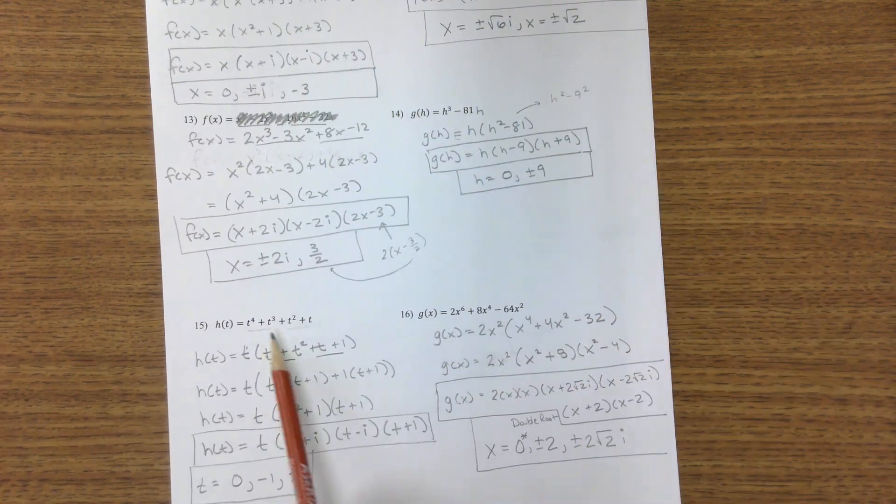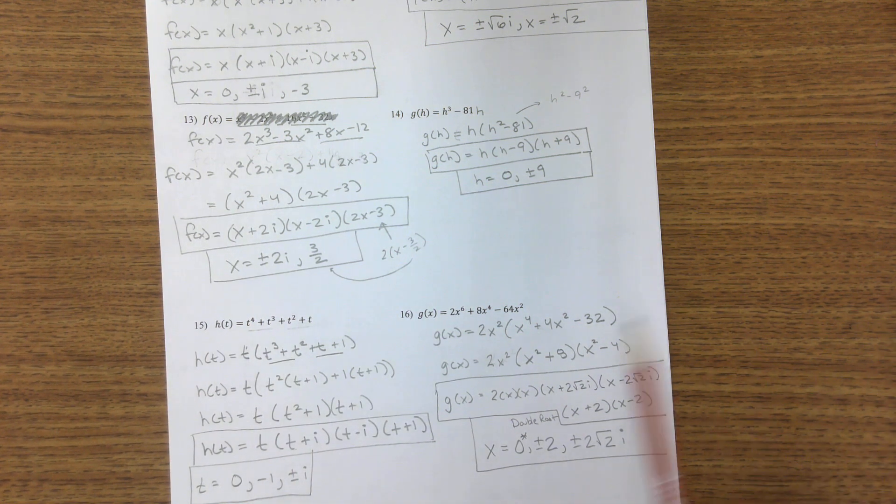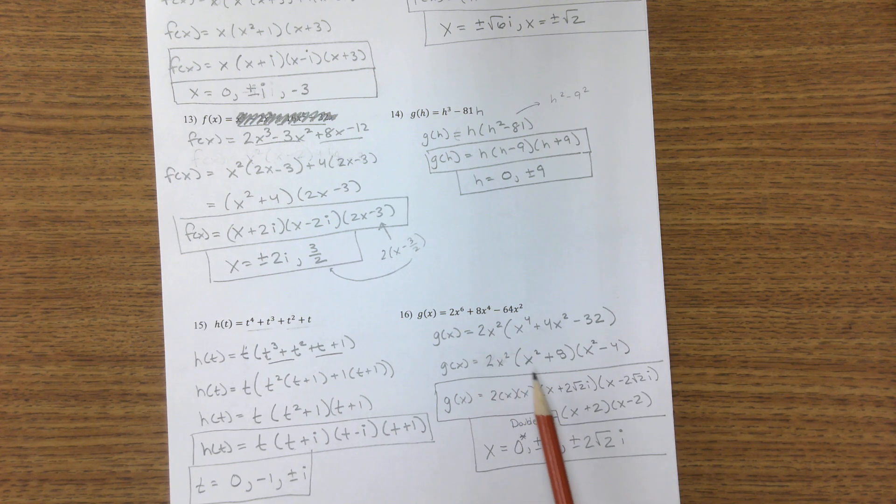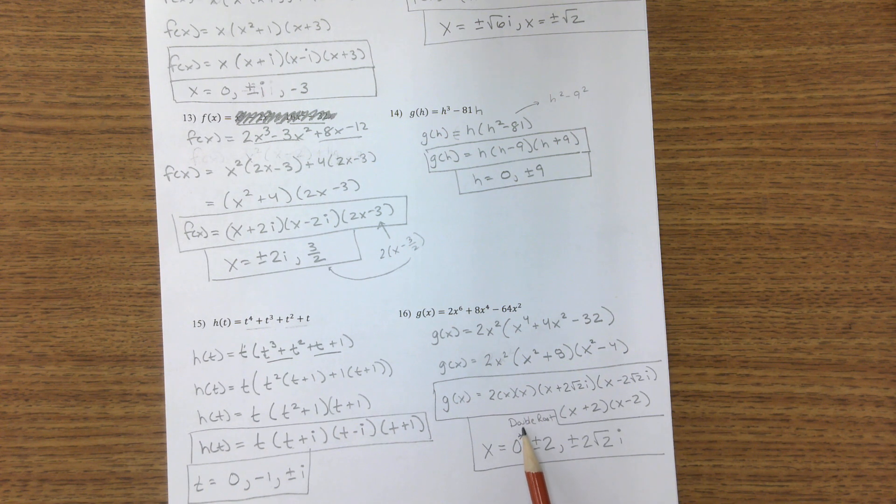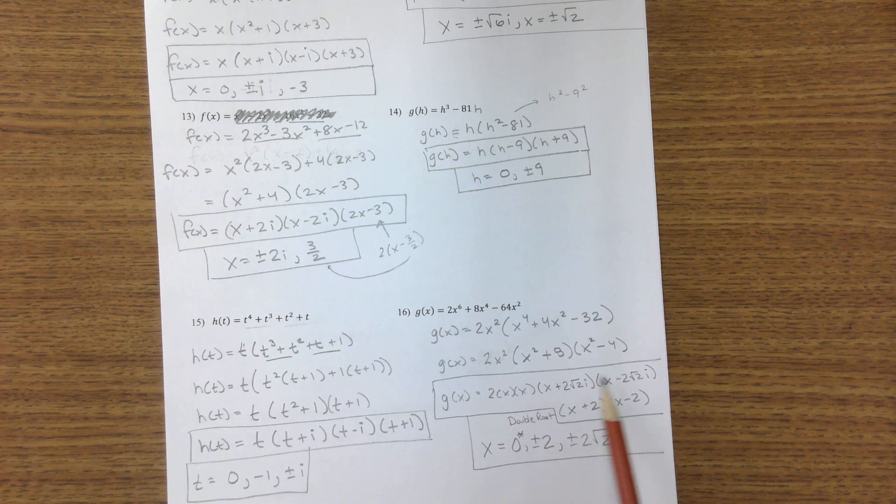Factor out a t, factor by grouping. You'll have your solutions. Same deal here, but I factored out an x, 2x squared. You can write it like this, you could write it like this. Zero is a double root, there's zero zero, and then I have my four solutions here. So 1, 2, 3, 4, 5, 6.